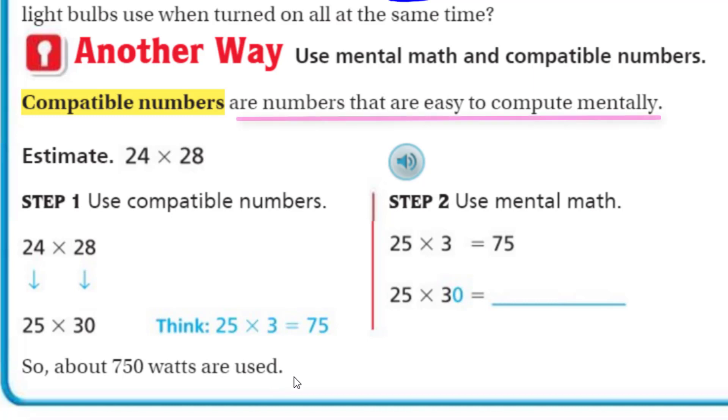Now, compatible numbers, they say, are numbers that are easy to compute mentally. Think to yourself. So, estimating or rounding is a little bit different than compatible numbers. We might want to think that they're the same, but they're really not. Rounding really has to do with coming up with that estimated quantity that is about. Where compatible numbers are actually numbers that you can do in your head. So, we'll take a look at this. Here, it says estimate 24 times 28.